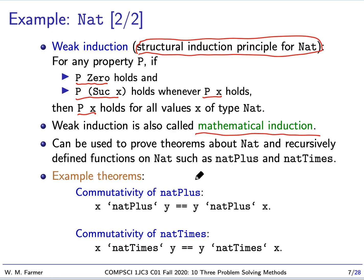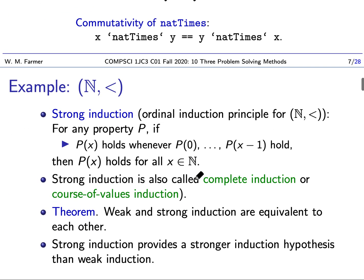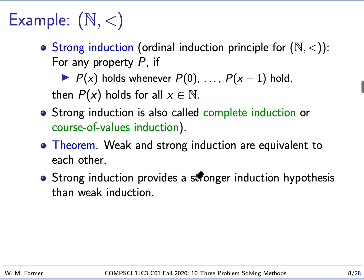This is one way to think about the natural numbers - we can think of the natural numbers as being an inductive set. Another way of thinking about the natural numbers is we can think about it as a well order. As a well order, we have the natural numbers with less than. We have another principle.